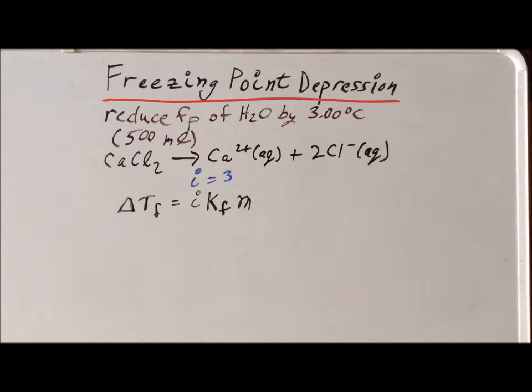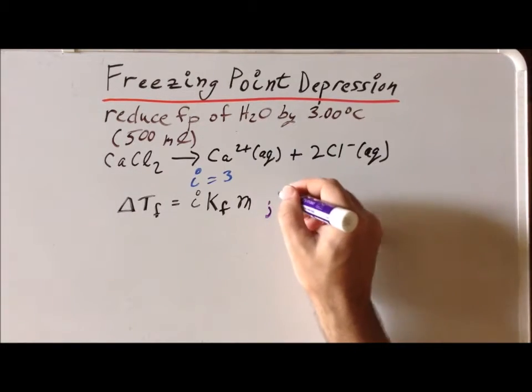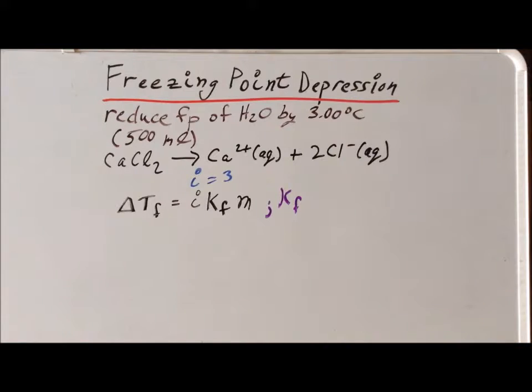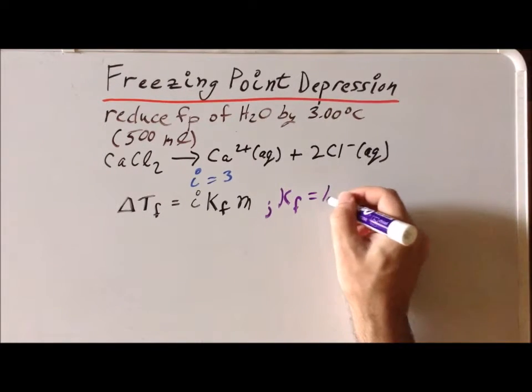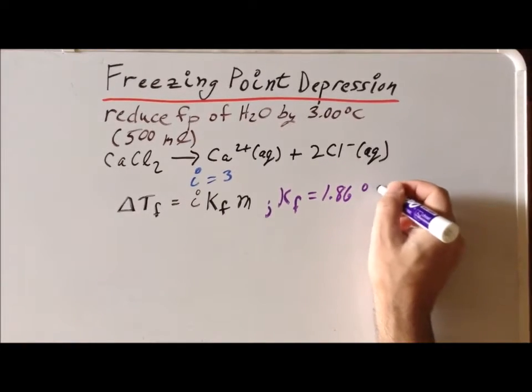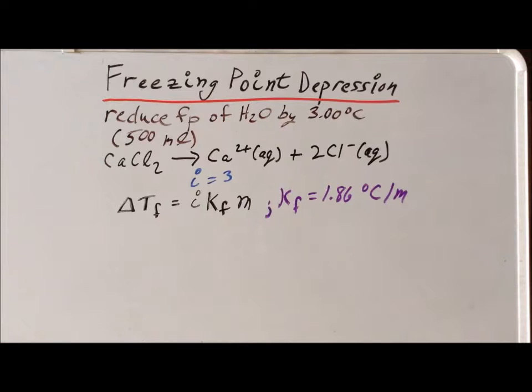We want to solve for m, because we can figure out the value of k sub f by looking up in a table of constants. We notice that this particular constant has the value of 1.86 degrees centigrade divided by molality. If you compare it to the ebullioscopic constant, the boiling point elevation constant, the values are not the same. The effect of one molar solution of the solute has a far bigger effect on the freezing point than it does on the boiling point.